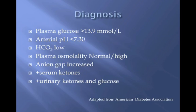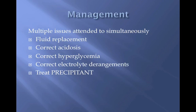Diagnosis consists of findings of hyperglycemia and an increased anion gap acidosis due to ketoacids. Multiple issues need to be attended to simultaneously in DKA, but we will go through each one separately.